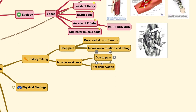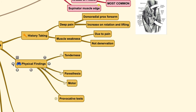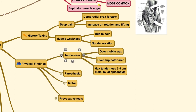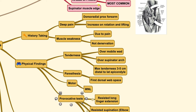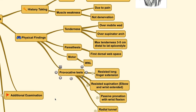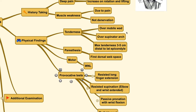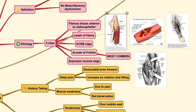The muscle weakness that occurs in this group of patients is not due to denervation as seen in posterior interosseous nerve compression neuropathy, but it is due to the pain. When we have pain, we are usually reluctant to move our body parts, and therefore the patient may show signs as if they have muscle weakness. Because there is only tenderness and pain as a symptom, you can only elicit tenderness over the area of compression, which is the radial tunnel. It is usually situated around the mobile wad and supinator arch, and the maximum tenderness should be found at an area around 3 to 5 cm distal to the lateral epicondyle.